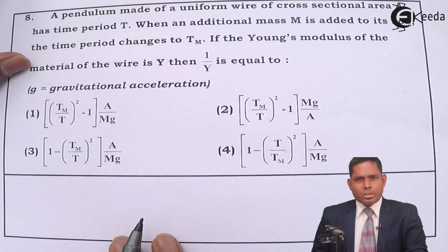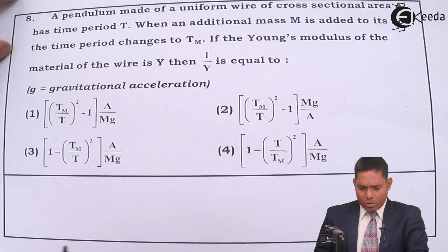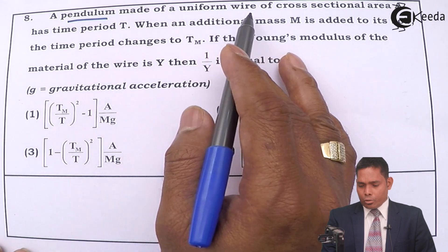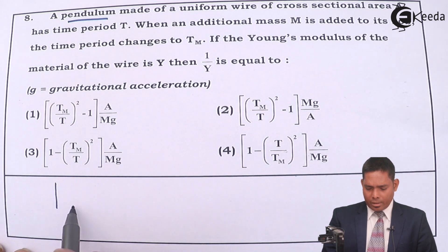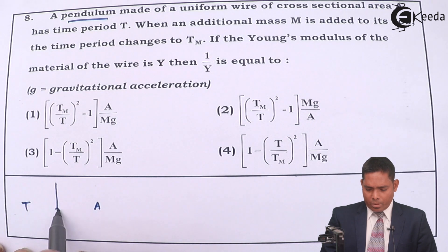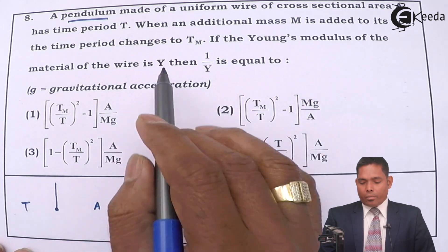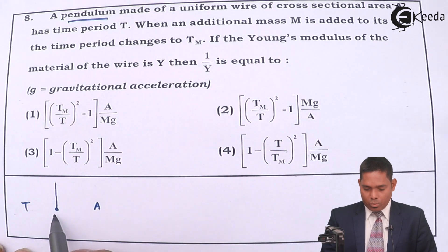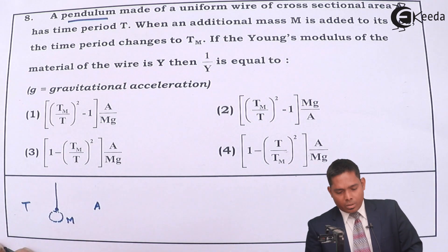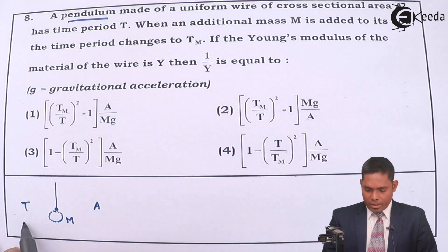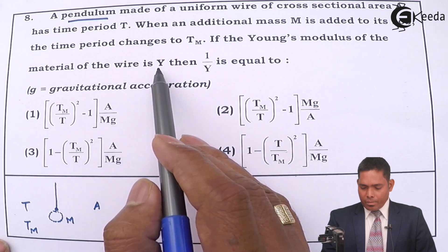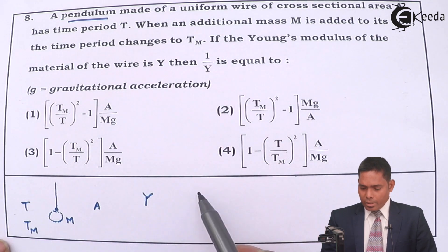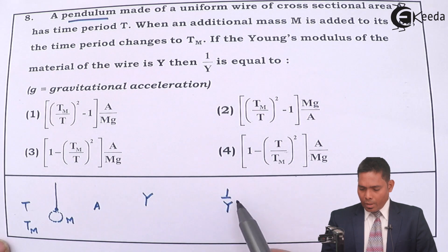Students, let us move to the next question, question number 8. Question number 8 is about the simple pendulum. A pendulum made up of a uniform wire of cross-sectional area A. Its time period T is a pendulum and it swings with time period T. When an additional mass M is attached to its block, the time period changes to Tm. If the Young's modulus of the material of the wire is Y, then you have to find 1 upon Y.